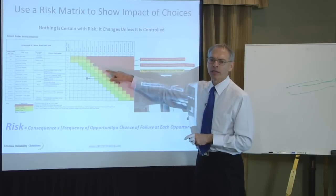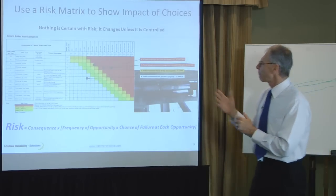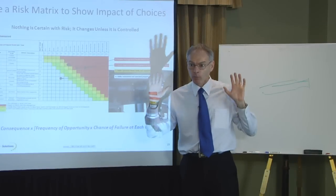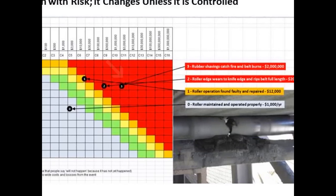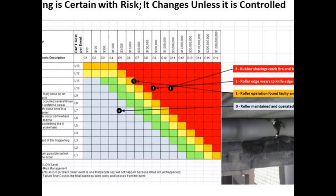To get to this level of damage would be a couple of months of rubbing — so this roller has been failed for at least a couple of months. Once I get to the point of a knife edge, I can get a tear costing $200,000 to replace the whole belt. Or it can go the other pathway — shaved conveyor rubber catches light and burns the whole thing down, losing $2 million. I can paint this picture for production people. Mr. Production Manager, I've got to get to that roller in the next couple of weeks, otherwise here are the two things that could happen.